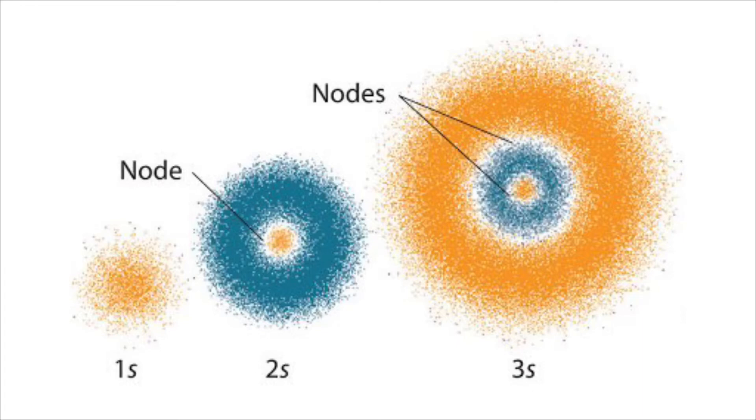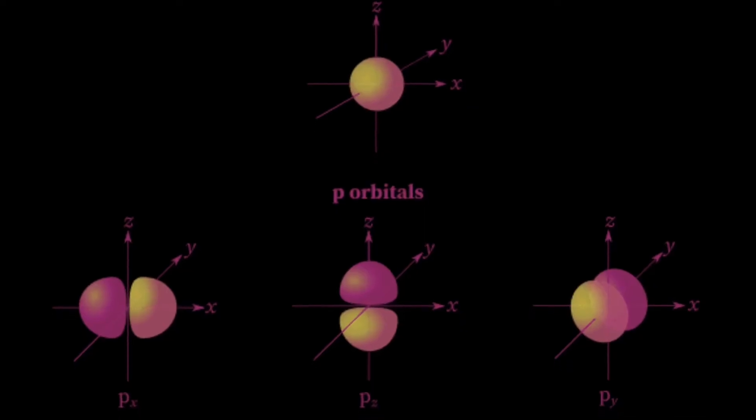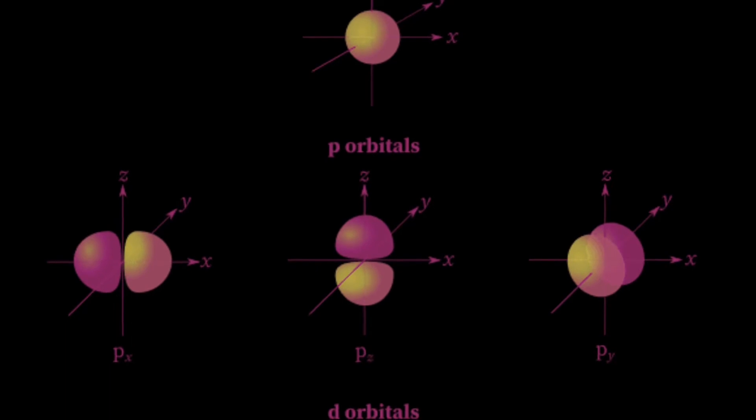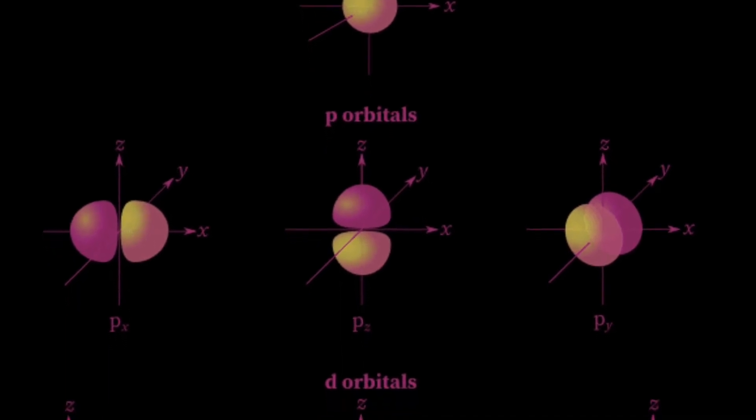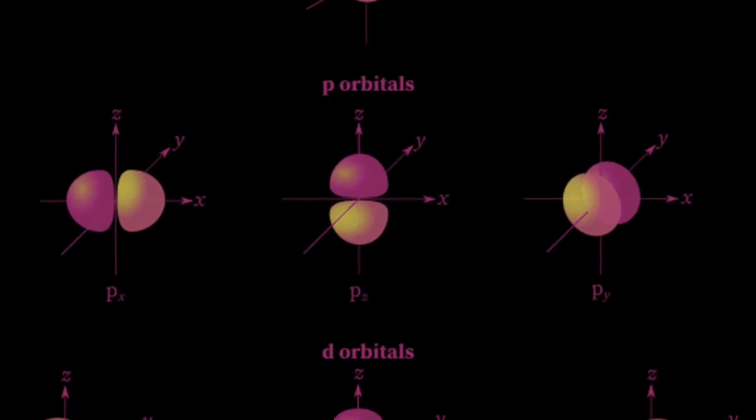The nodes are regions in which an electron has a 0% probability of being found. For spherical s orbitals, the distance from the nucleus, or r, is the main factor affecting an electron's probability distribution.